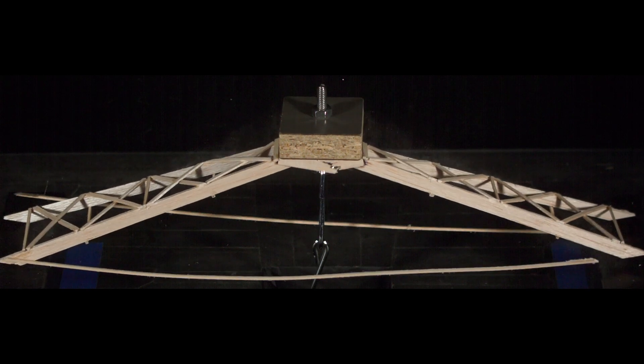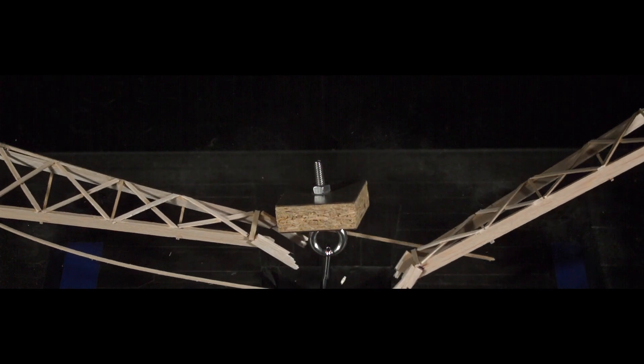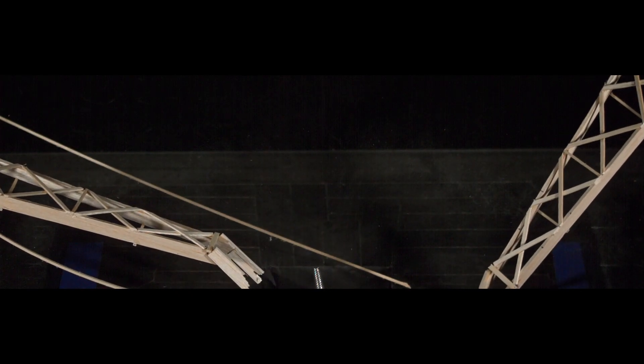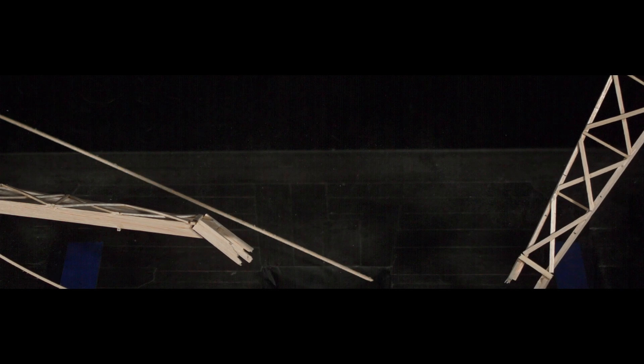The high-speed clearly shows the tension member ripping away from the right front leg. This kind of footage can be extremely useful if you're trying to optimize the design and want to see what failed first.